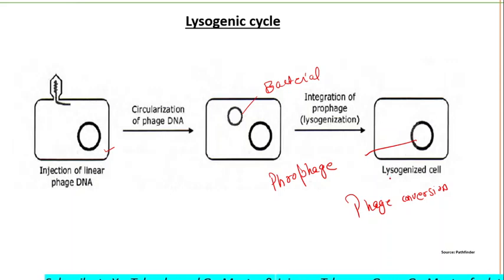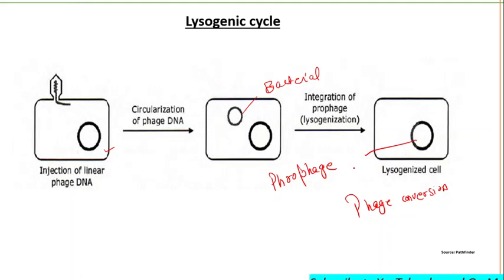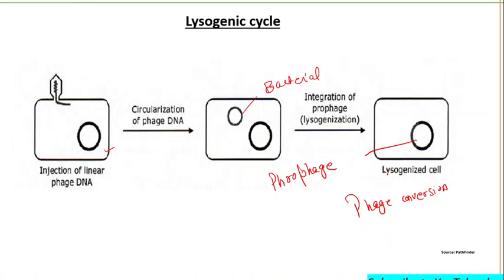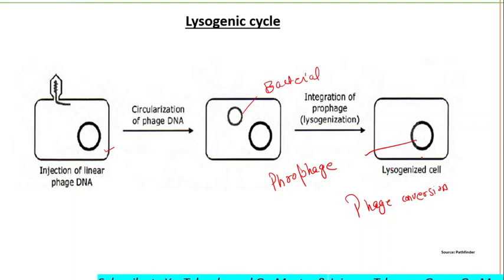The physical state of prophage is not identical for all temperate viruses. For example, the prophage of bacteriophage lambda in E. coli is integrated into the bacterial chromosome at a specific site and replicates as part of the bacterial chromosome, whereas the prophage of bacteriophage P1 in E. coli replicates as an extrachromosomal plasmid.